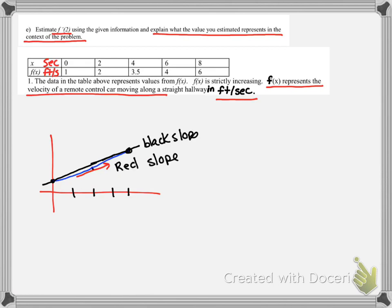If all we have is data from a table, all we can do is use the information f of 4 minus f of 0, all over 4 minus 0. So this AROC is the best estimate we can do of the instantaneous rate of change that we're looking for.